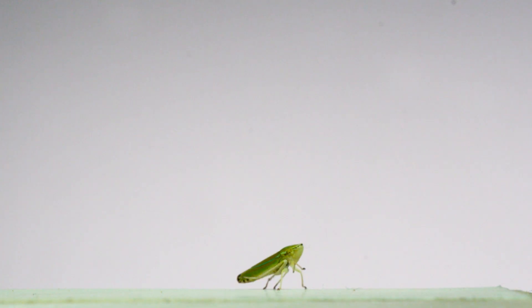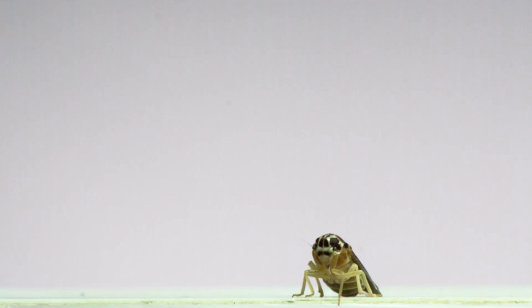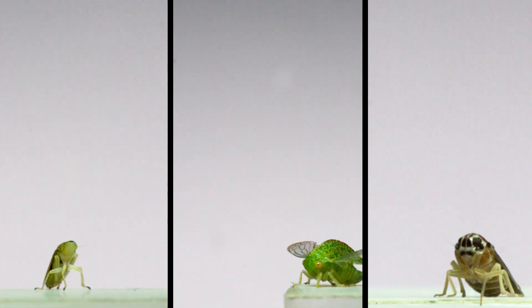Wherever you are in the world, an insect like one of these - a leafhopper, a treehopper, a froghopper, or a planthopper - is likely right outside, not far from your door. They're all incredible insects. Just watch what they can do.